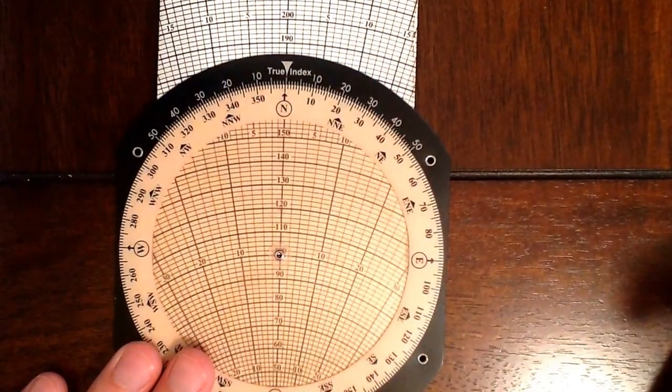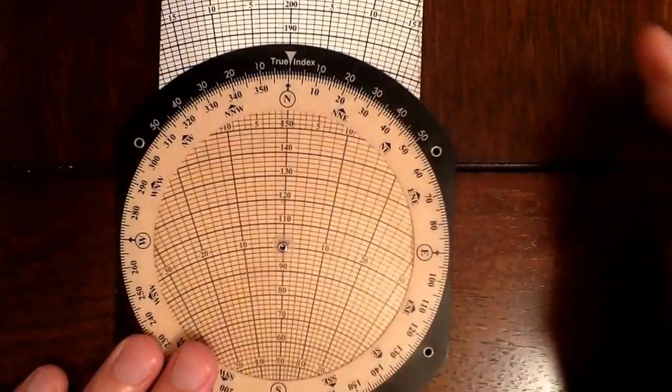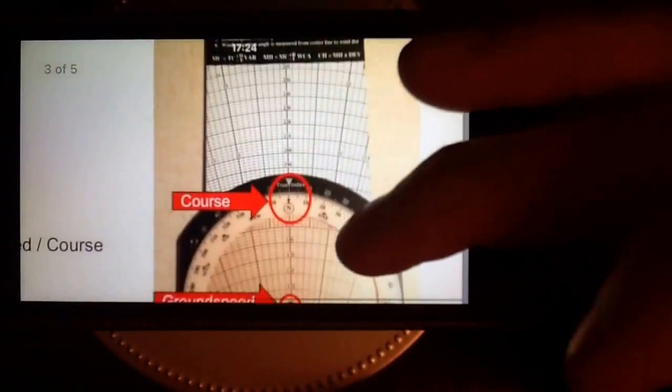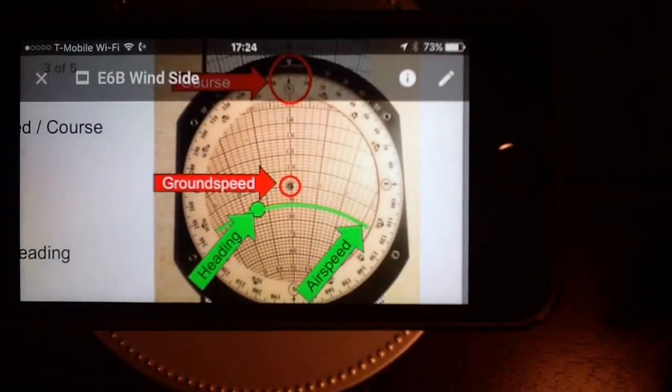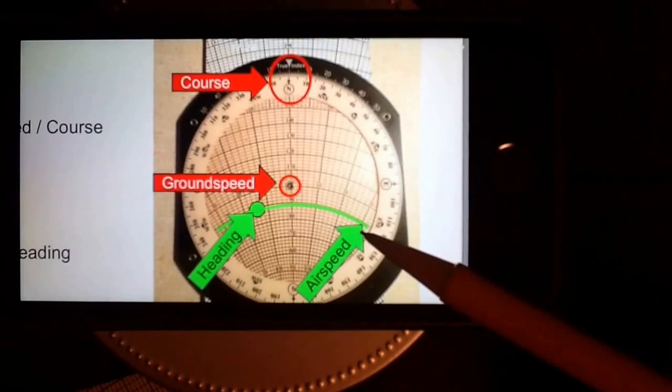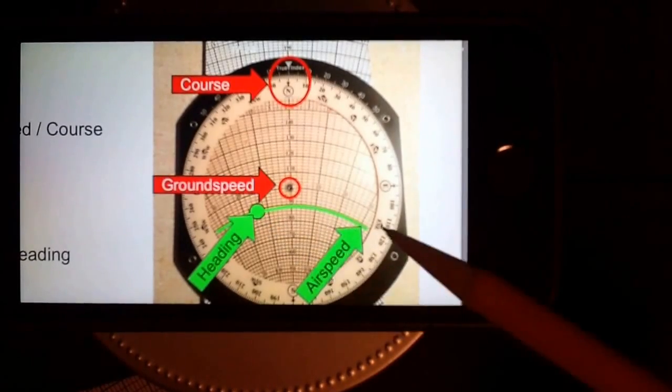So we have it set up in wind mode now. Now it's time to rotate the card and put it into aircraft mode. So once we have this configured, now we're going to use aircraft mode. We're going to set the course at the top, and we're going to set the heading or the wind dot to be over the airspeed arc.